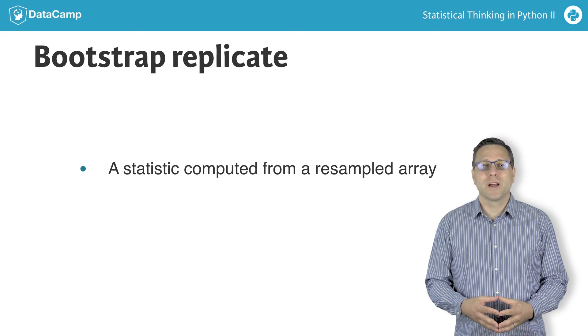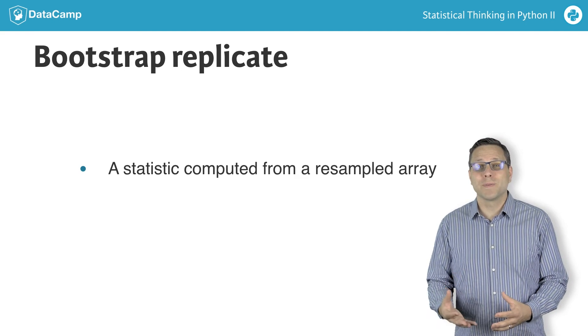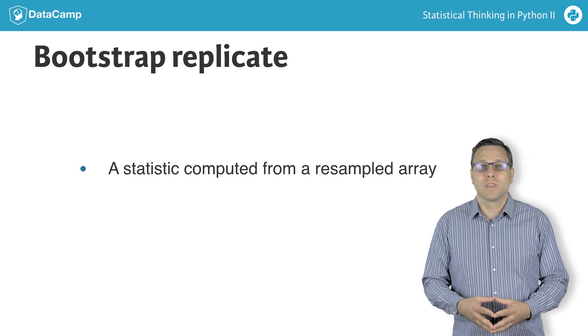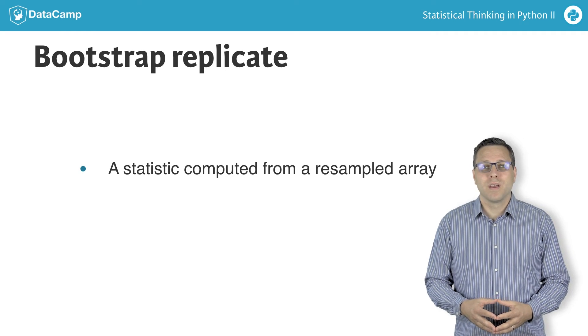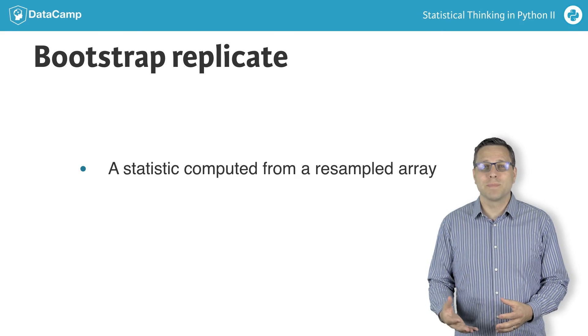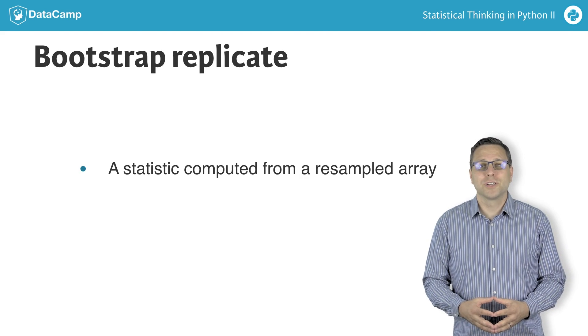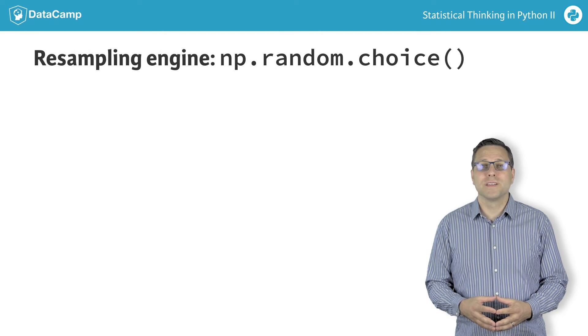Let's look at how we can generate a bootstrap sample and compute a bootstrap replicate using Python. We will use Michelson's measurements of the speed of light. First, we need a function to perform the resampling. The numpy function random.choice provides this functionality.